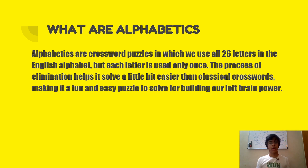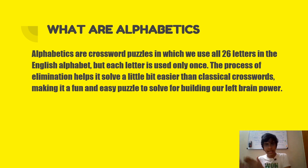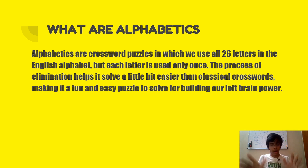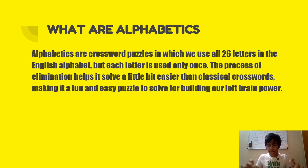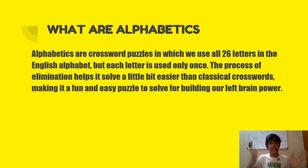It makes it a very fun and easy puzzle to solve for building left brain power. It is a little bit easier because of the process of elimination — we know that A, B, C, D or some other words already used are done and should not be repeated. So the remaining word is constituted with letters other than those already in the crossword. That is the process of elimination.